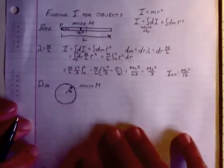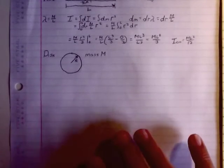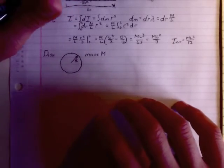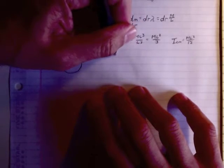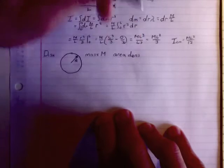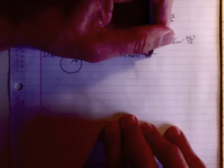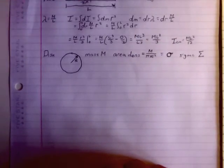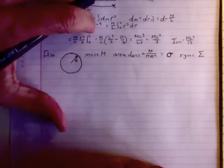Let's continue on and do the disk — it's slightly more difficult but not impossible. The disk has mass m and radius R. We define the area density sigma as how much mass per unit area: sigma = m/(πR²). Lambda is used for linear density, sigma for area density — very common symbols.